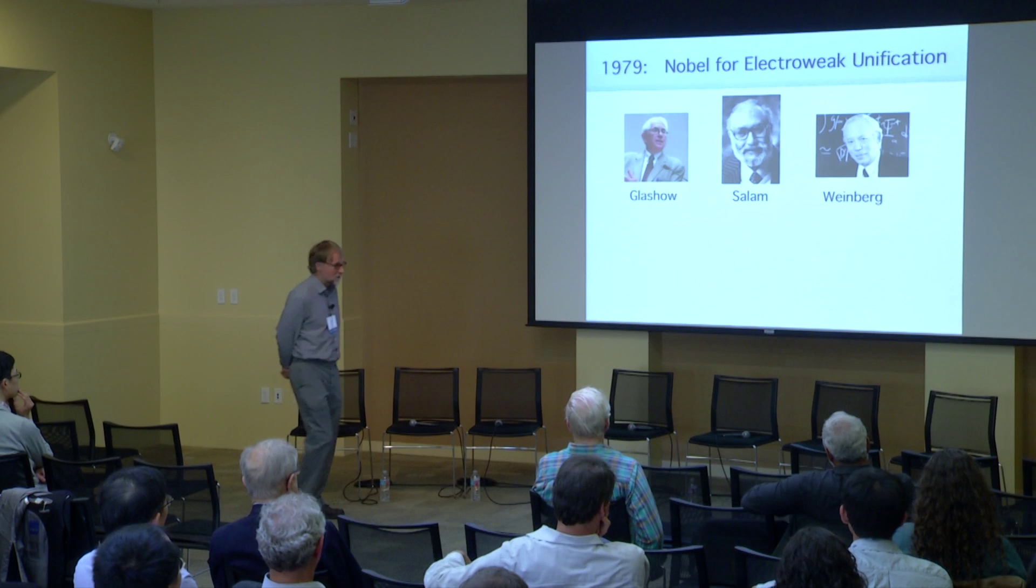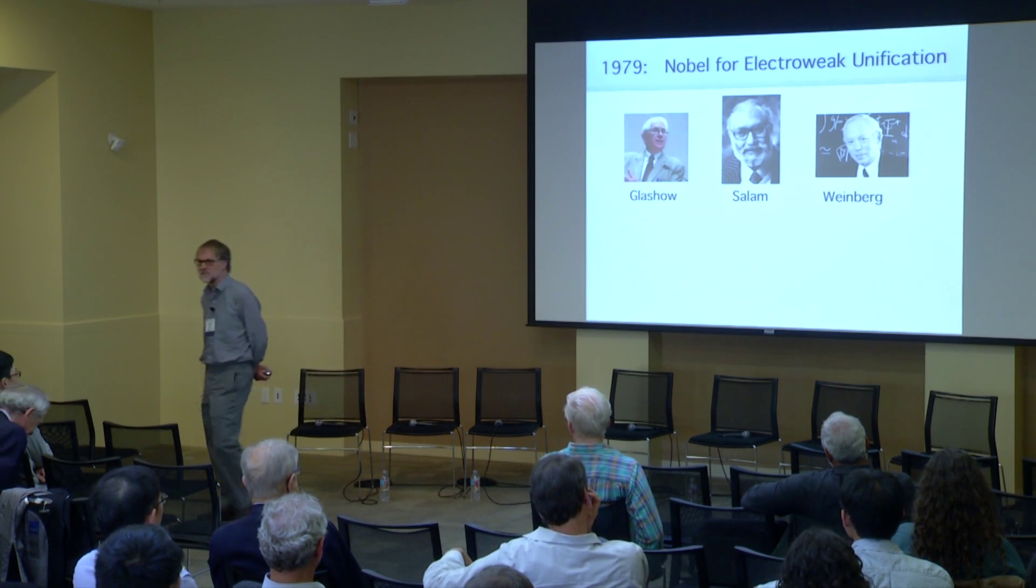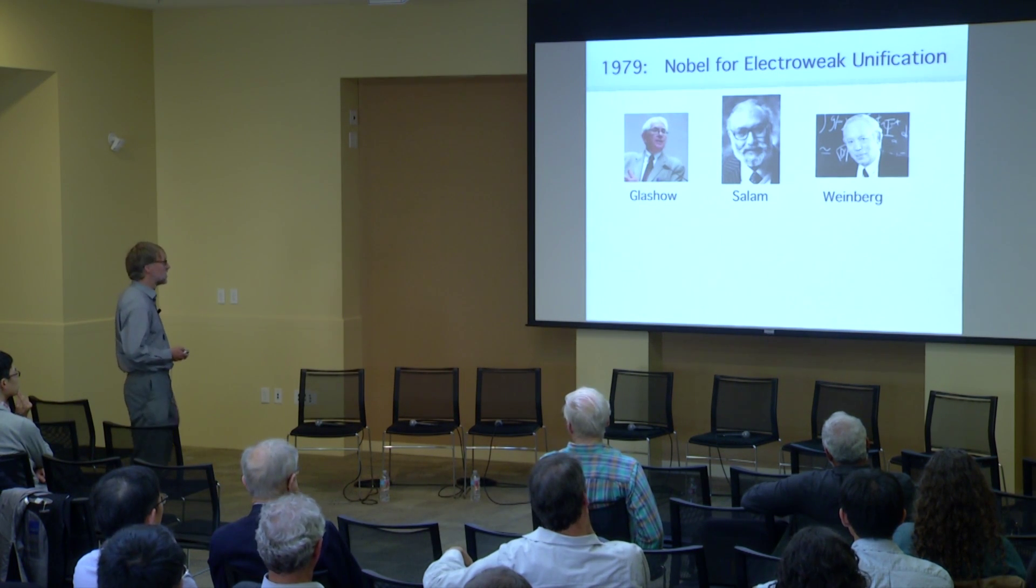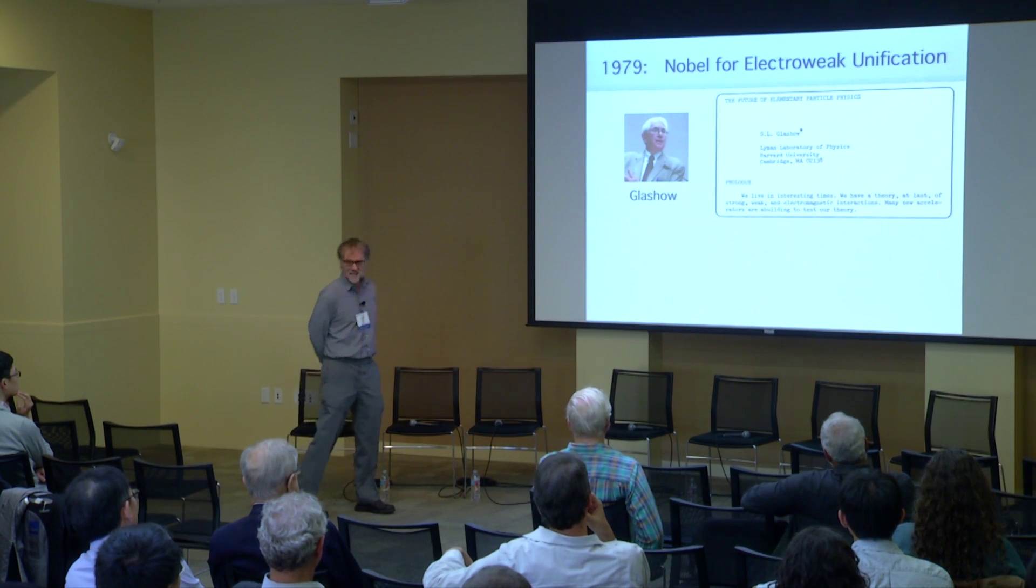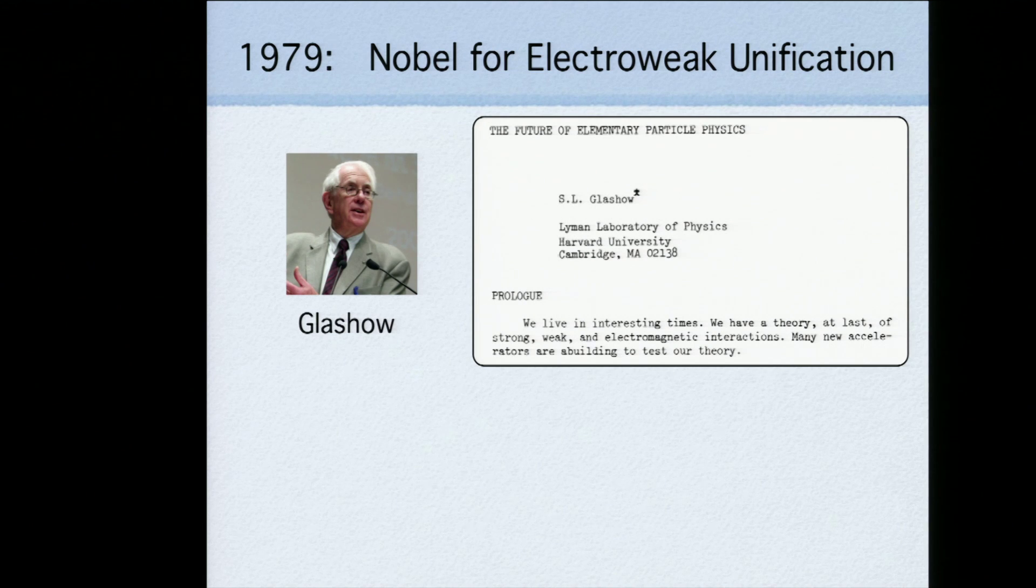The electroweak unification part of it was finally deemed to be correct in 77, and it only took two years for these gentlemen to win the Nobel Prize. Precisely that year, one of them, Glashow, a very bold fellow, decided that he would make predictions about the future of particle physics. And he says, we live in interesting times. We have a theory at last of strong, weak, and electromagnetic interactions. Many new accelerators are building to test our theory.